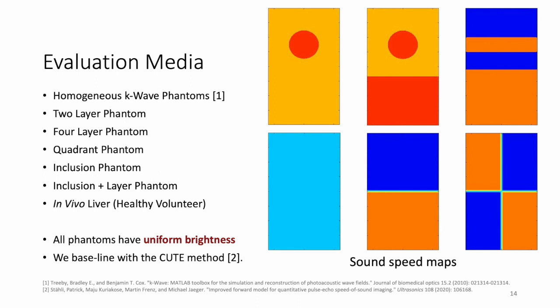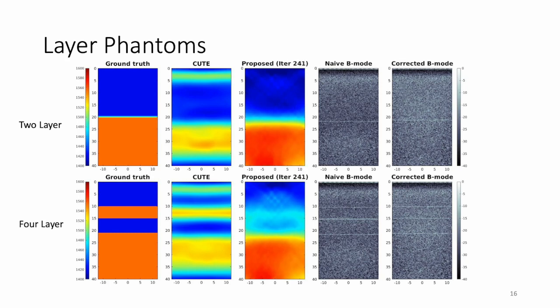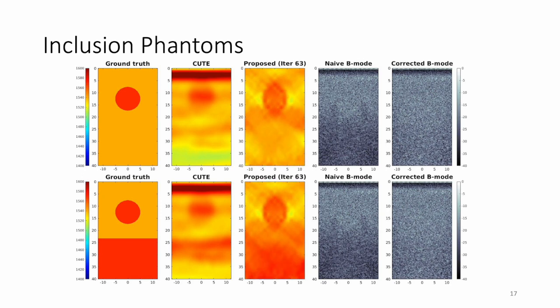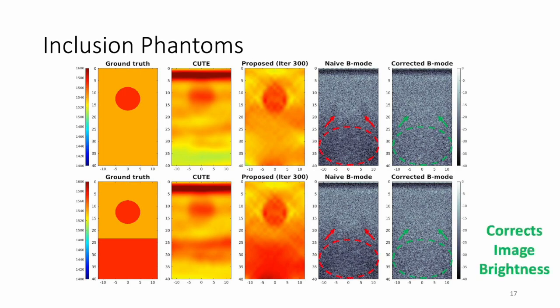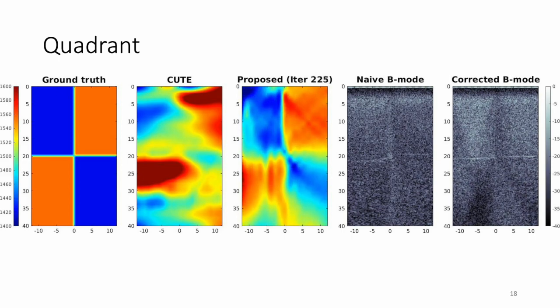We evaluate our method using in-silico phantoms created with the K-Wave Simulation Suite. Phantom geometries include inclusions, layers, and checkerboard patterns with varying sound speed and uniform echogenicity. We compare our method with the state-of-the-art sound speed estimation technique, Q. On layer phantoms, our method accurately resolves sound speeds in both two- and four-layer cases. On inclusion phantoms, our method correctly resolves the inclusion in the sound speed map while reducing the contrast reduction due to aberration. In the quadrant phantom, our method corrects geometric distortions while improving speckle brightness and estimating sound speed.